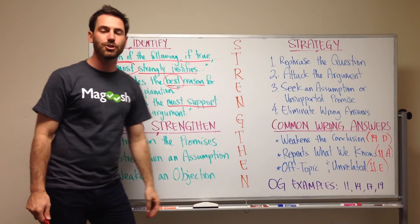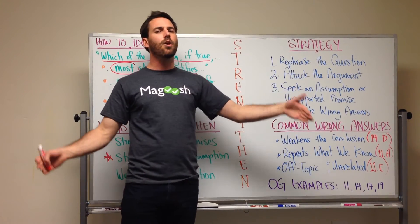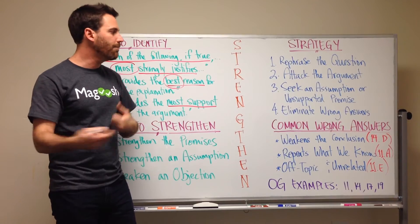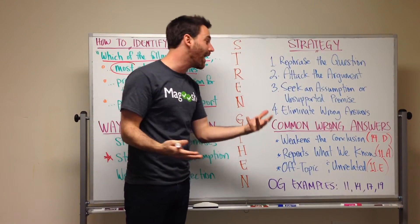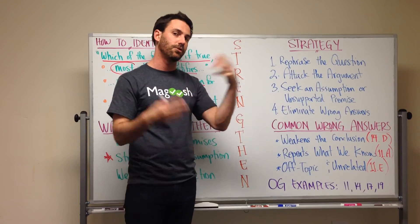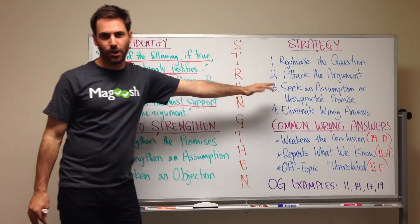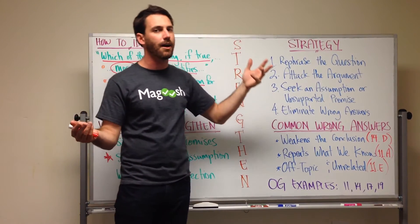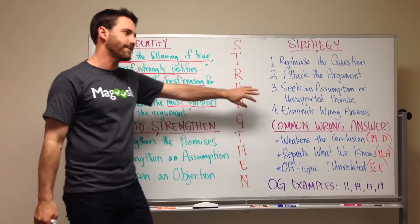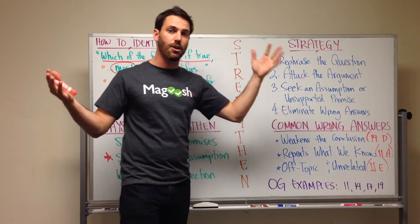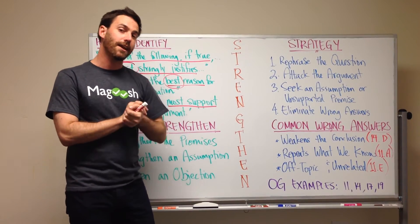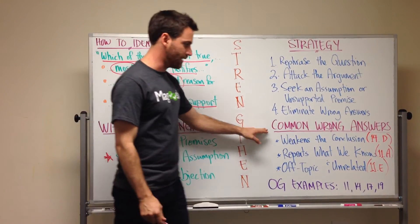After that, you want to seek an assumption or an unsupported premise — look for where there's a gap in the argument, where a premise or aspect of the conclusion is mentioned but doesn't have strong support, or where support is implied but not stated. That's going to be a good clue for evaluating the answer choices. Don't obsess over this step — if you spend 15 to 20 seconds thinking about assumptions and premises, that's fine, but if you don't come up with anything, just move on. Finally, step four: eliminate the wrong answers. There are more wrong answers than right answers, and they're easier to find, so improve your odds by eliminating common wrong answers.